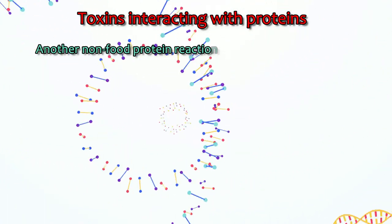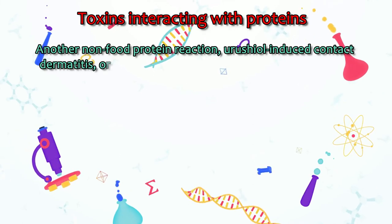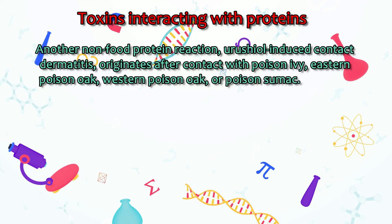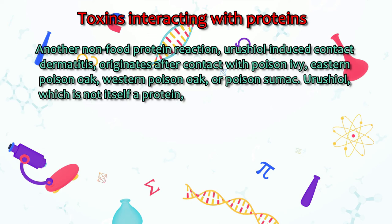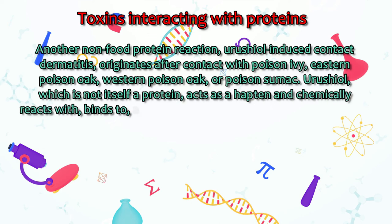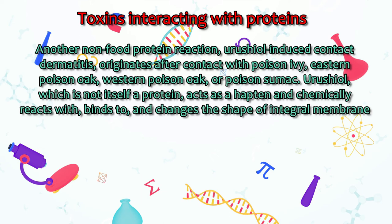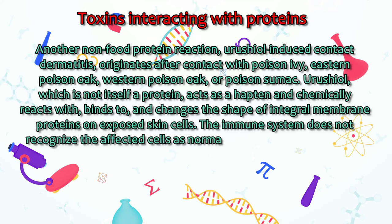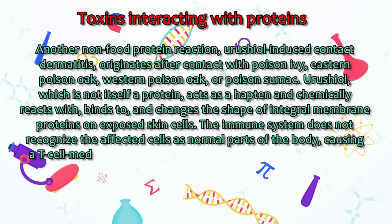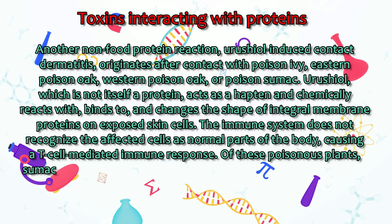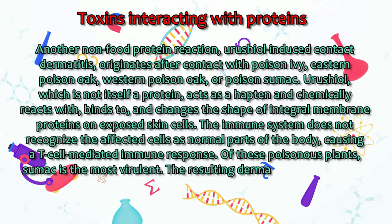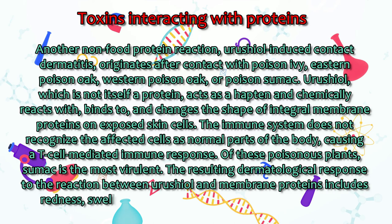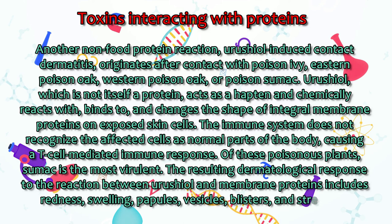Another non-food protein reaction, urushiol-induced contact dermatitis, originates after contact with poison ivy, eastern poison oak, western poison oak, or poison sumac. Urushiol, which is not itself a protein, acts as a hapten and chemically reacts with and changes the shape of integral membrane proteins on exposed skin cells. The immune system does not recognize the affected cells as normal parts of the body, causing a T cell-mediated immune response. Of these poisonous plants, sumac is the most virulent. The resulting dermatological response includes redness, swelling, papules, vesicles, blisters, and streaking.